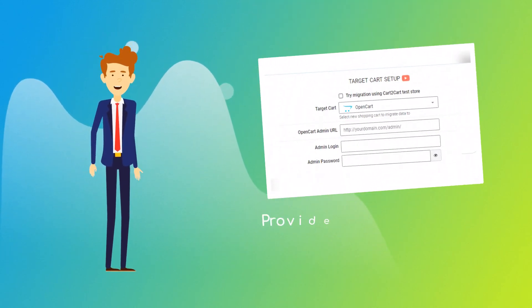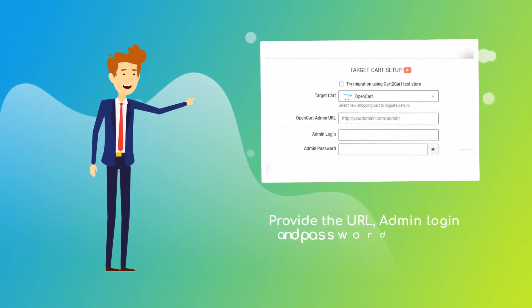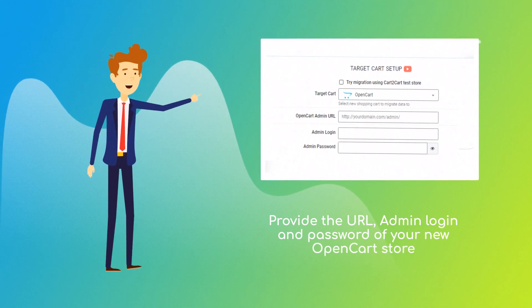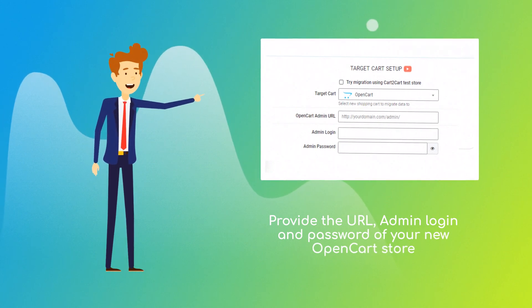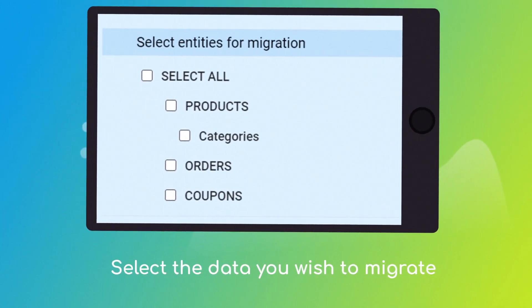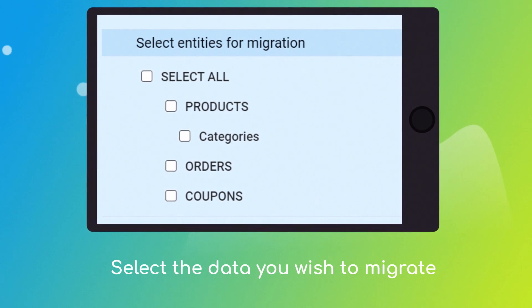Next, provide the URL, admin login, and password of your new OpenCart store. Once done, click the Choose Entities button to select the data types you'd like to migrate to OpenCart.